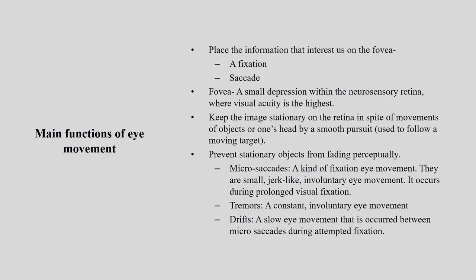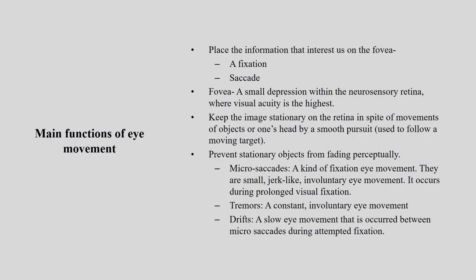Tremor is a constant and involuntary eye movement. Drift is a slow eye movement that occurs between micro-saccades during attempted fixation. You are trying to concentrate, and there are still small micro-saccades present — that very slow eye movement occurring between micro-saccades during attempted fixation is called drift.